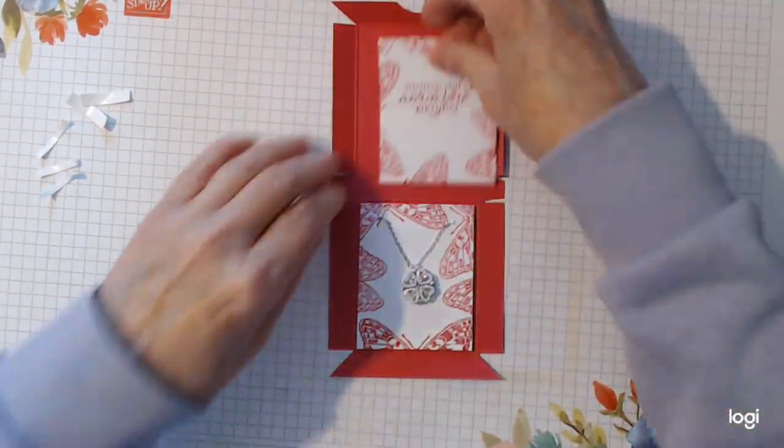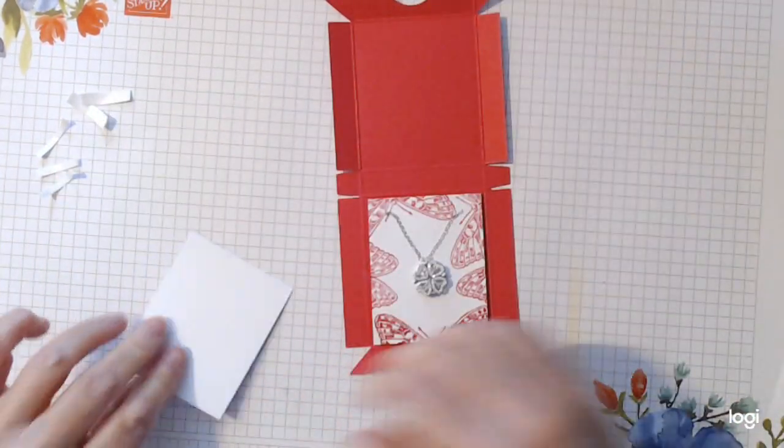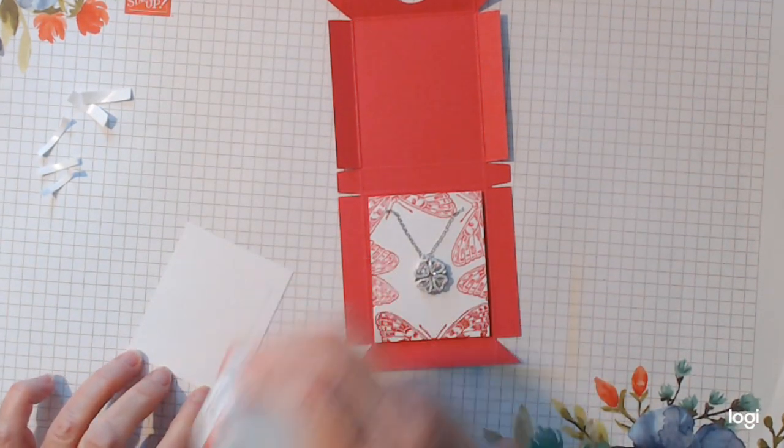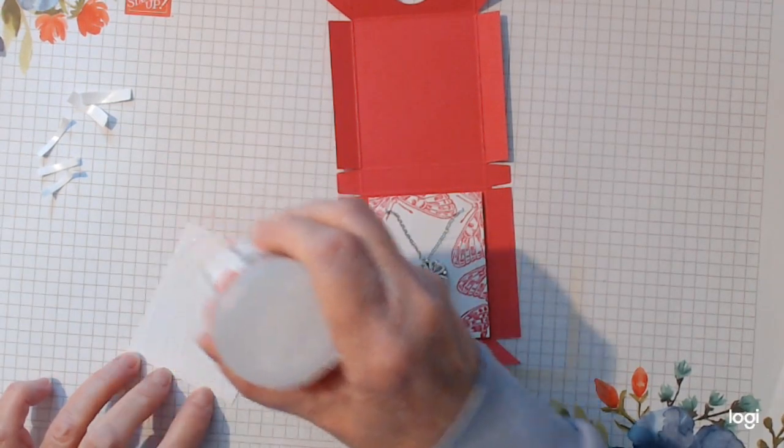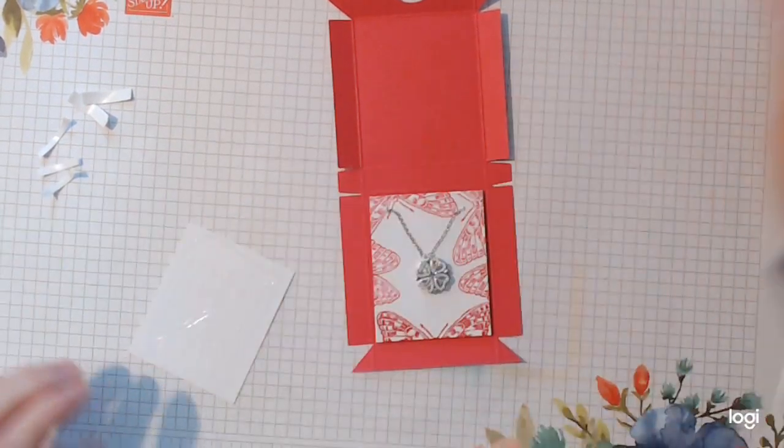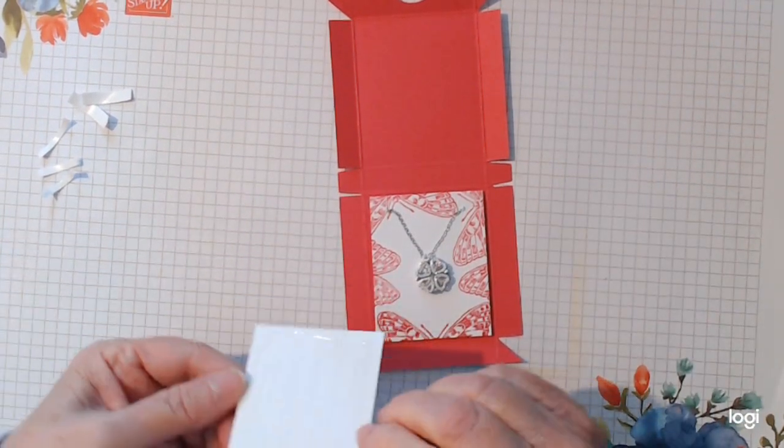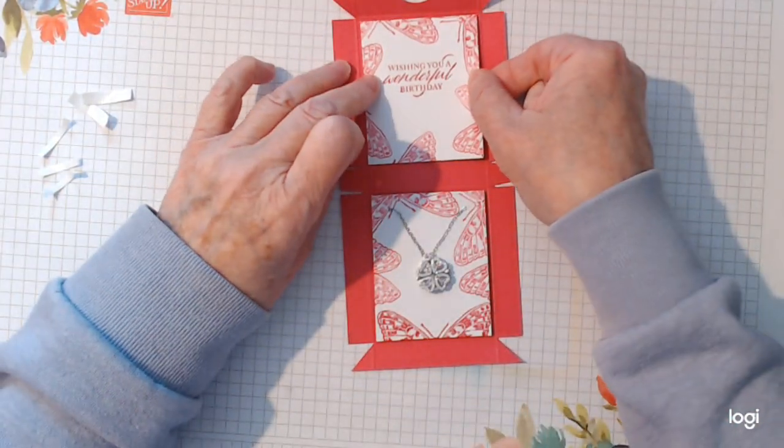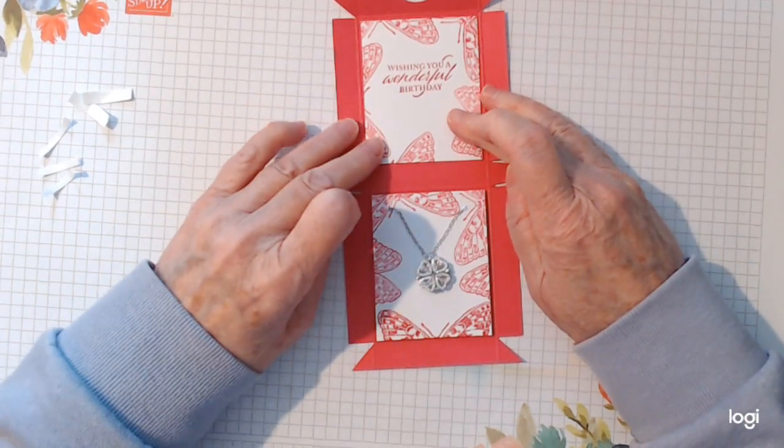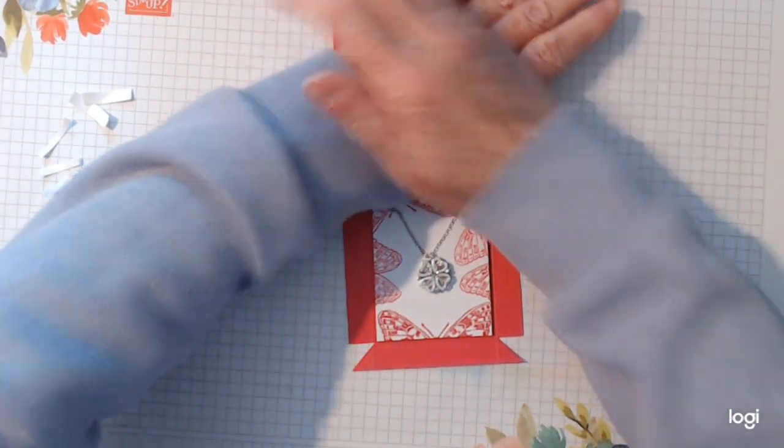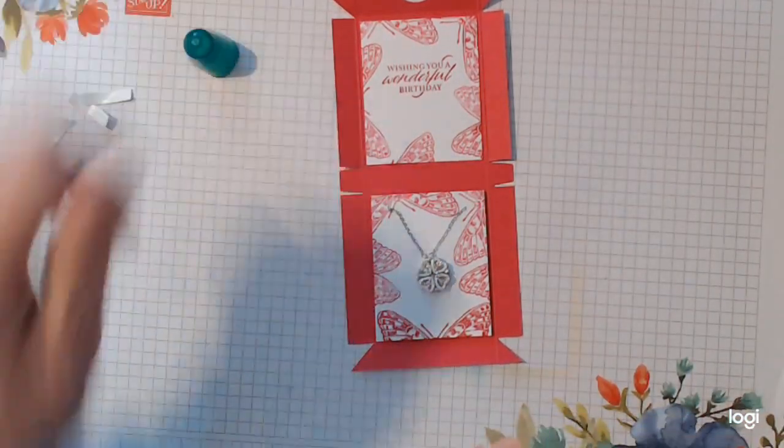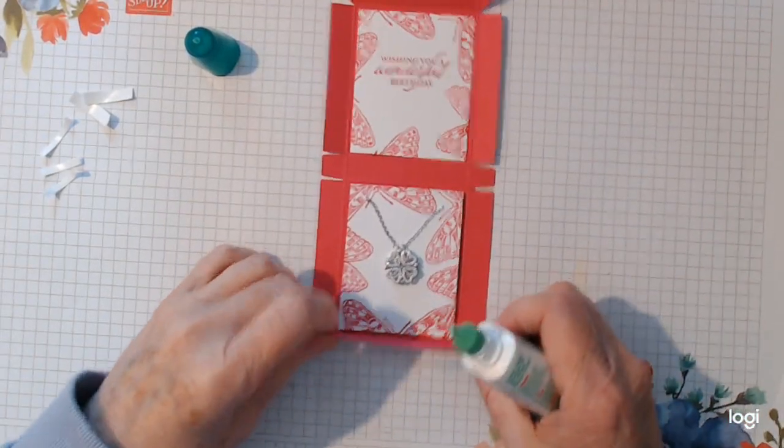And we'll just put the top one flat on the box. It doesn't need to be raised up. So she will open the box and she'll see this thing inside. Just want to make sure I've got it not upside down.